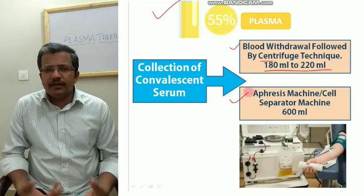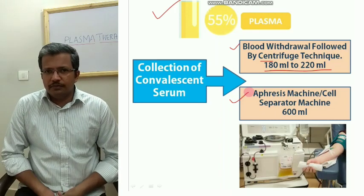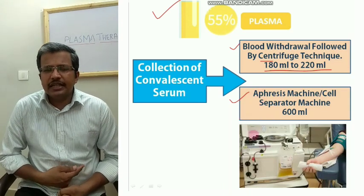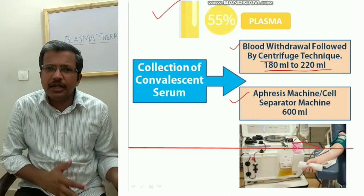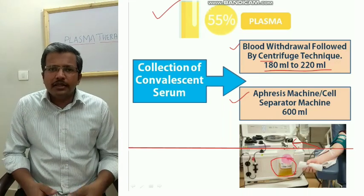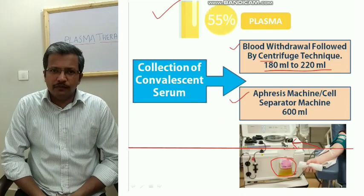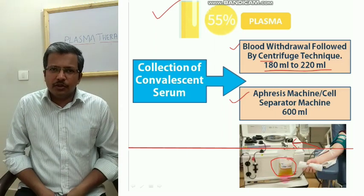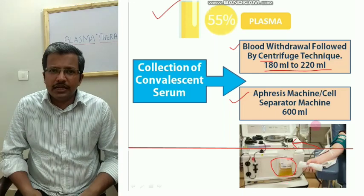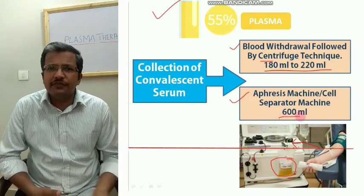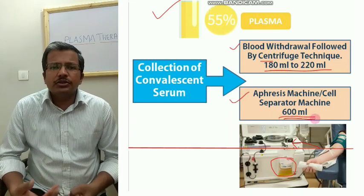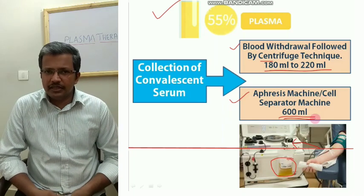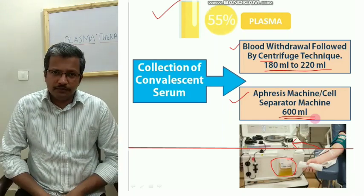The second technique is called apheresis separation, or a cell separator machine. Using this machine, blood is taken directly in; the machine separates the plasma from the other blood components, collects the plasma into a bag, and returns the remaining components back to the donor's body. This means no other blood component is wasted, and you obtain a much greater amount of plasma — around 600 to 800 ml — making the second technique the most useful and beneficial.